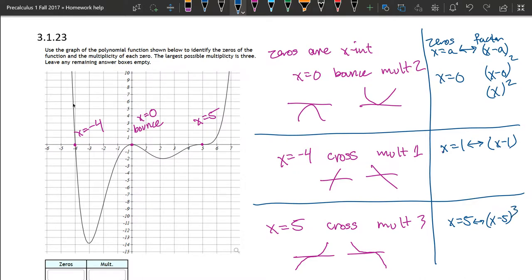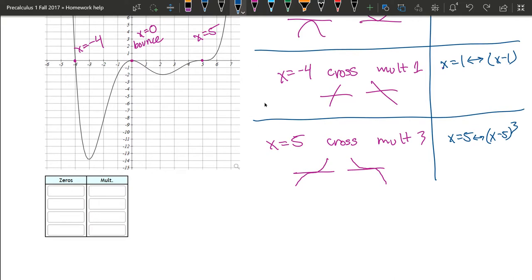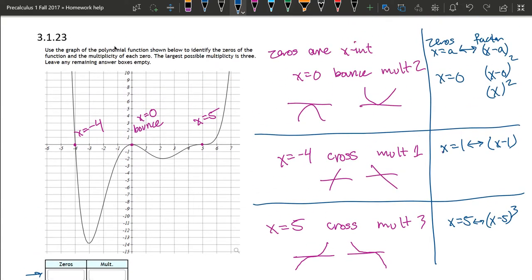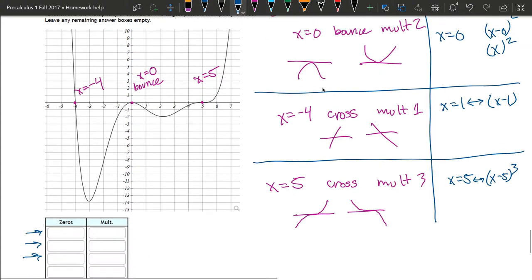There's only three x-intercepts, or three zeros. And they also tell us the largest possible multiplicity is three right here. So that's a big hint that we don't have any multiplicity four, five, or six, or more. And then you're only going to write down the first three zeros. And it may say them in order. So when in doubt, go smallest to largest.